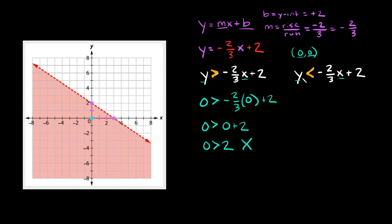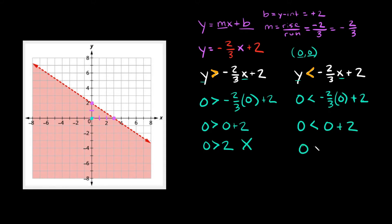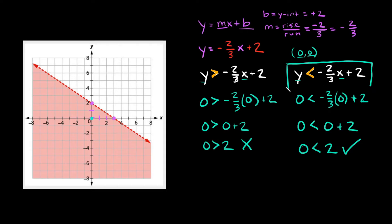Let's test the second inequality. Plugging in zero for y: zero is less than negative two-thirds times zero, plus two. Simplifying, we have zero is less than positive two. Is this a true statement? Yes it is. So that means y is less than negative two-thirds x plus two is your answer.